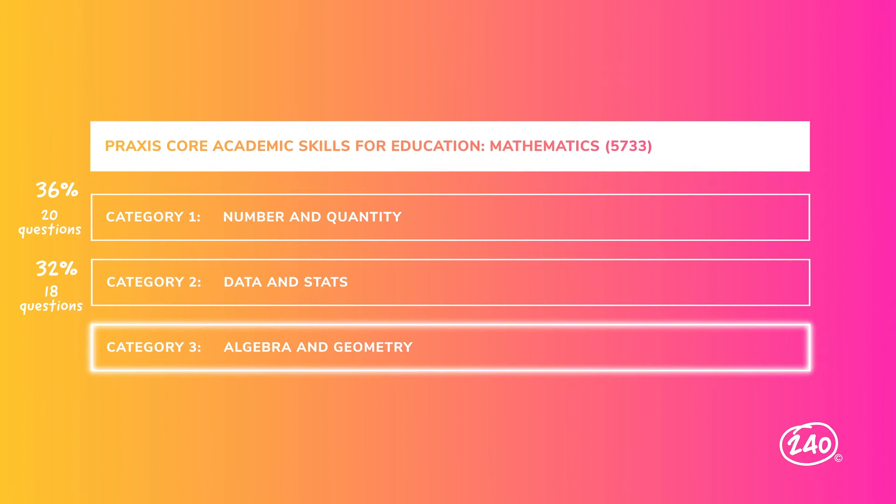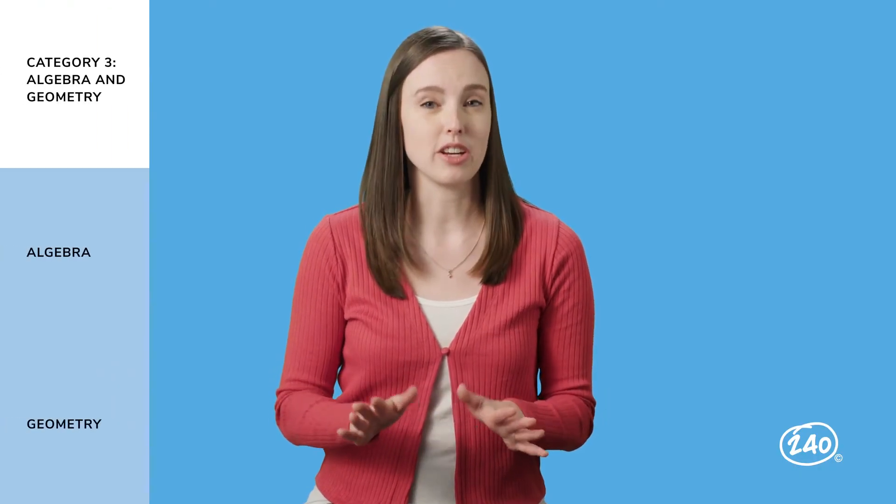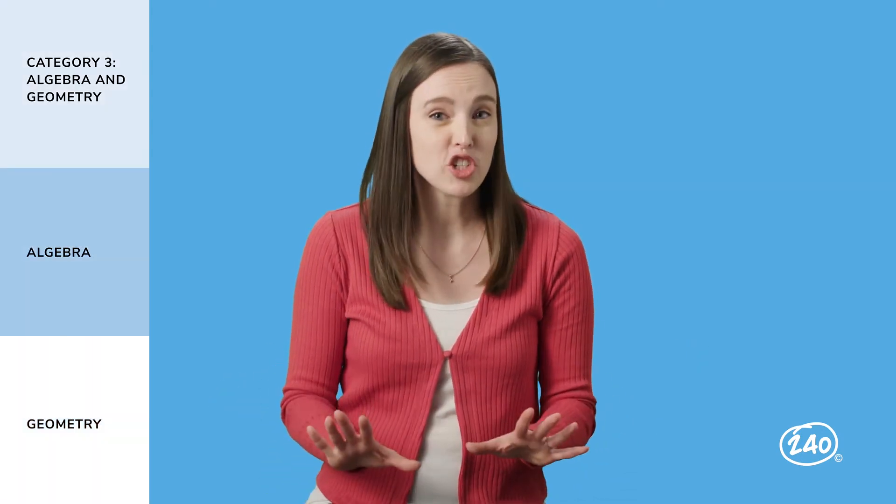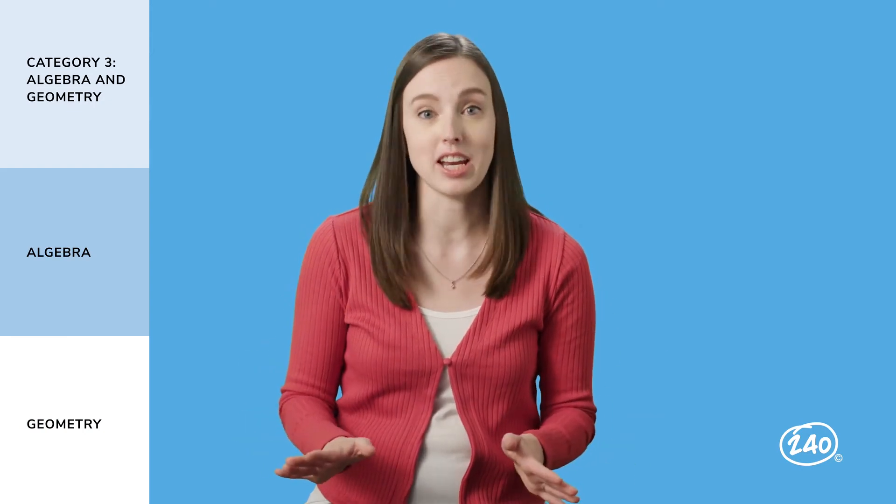So helpful, right? That was Loretto, just one of the many all-star tutors we've got in our guide. Our team will have you mathing your way to a passing score in no time. That's it for data and stats. The last category on the list is Algebra and Geometry. Just like the previous category, this one makes up 32 percent of your exam, or the last 18 questions. This category breaks down into two pretty obvious chunks: Algebra and Geometry. But each of these chunks still has a ton of information in it. We'll still pick out one super important nugget from each that you're likely to see on your test.